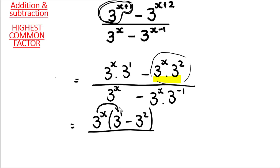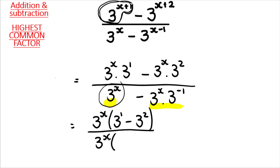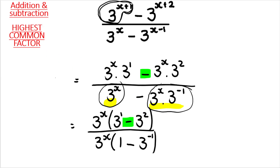At the bottom, there are also two terms, so we factorize. We can take out three to the power of x from both terms. In the leftover bracket: dividing the first term by three to the power of x gives one (anything divided by itself). Dividing the second term by three to the power of x gives three to the power of negative one — don't forget the negative. If there are two terms at the top, there must be two terms in the leftover bracket. Same rule applies for the bottom.